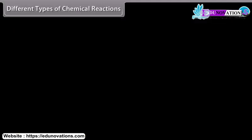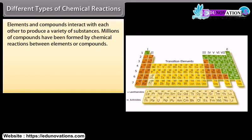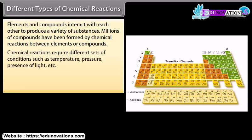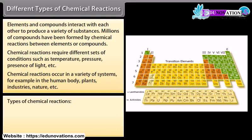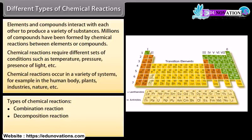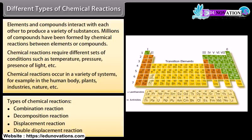Different types of chemical reactions. Elements and compounds interact with each other to produce a variety of substances. Millions of compounds have been formed by chemical reactions between elements or compounds. Chemical reactions require different sets of conditions such as temperature, pressure, presence of light. Chemical reactions occur in a variety of systems, for example in the human body, plants, industries, nature. Types of chemical reactions: combination reaction, decomposition reaction, displacement reactions, double displacement reactions.